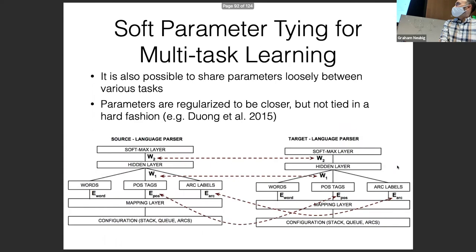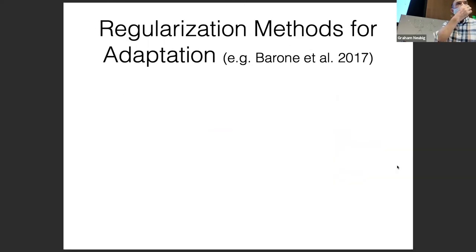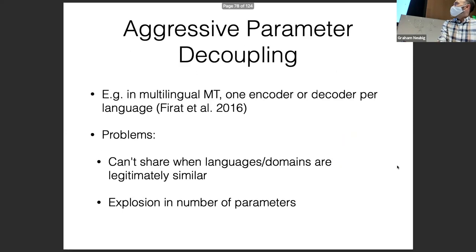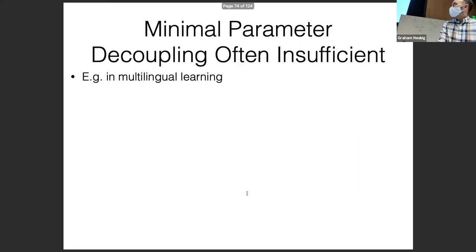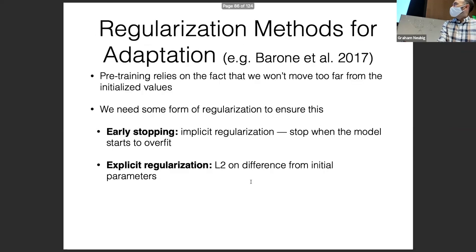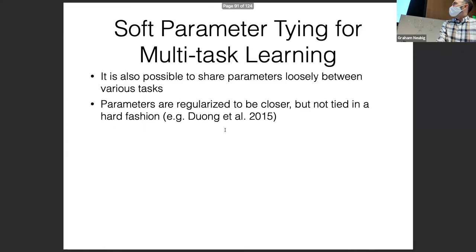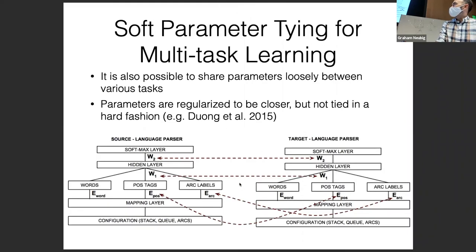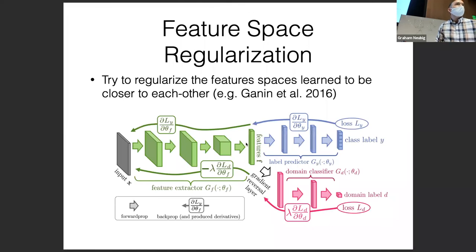I'm introducing a lot of methods here, and you might be wondering which one to use. I'd suggest starting with simple things — like a simple domain tag. As you start realizing you're having issues with your models, you can start thinking about more complicated things like adding adapters. You should always be doing early stopping anyway as part of standard training. Only when you're not seeing good results should you move to more complicated things like soft parameter tying, selective parameter adaptation, or feature space regularization.